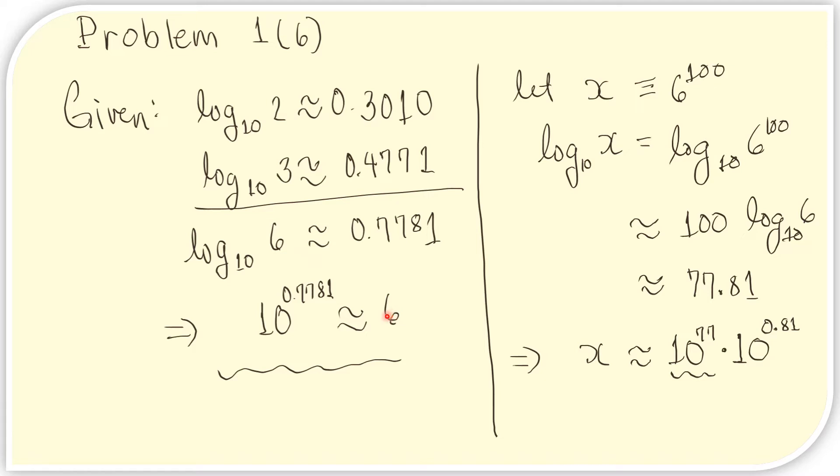We are interested in the number 6 to the 100th. Let x equal this number. If we get the logarithm of this, then we get this. We know that we can take out the exponent here and bring it here. Now we need to find this. But we already have that value here. And so we can substitute this here to obtain this value.